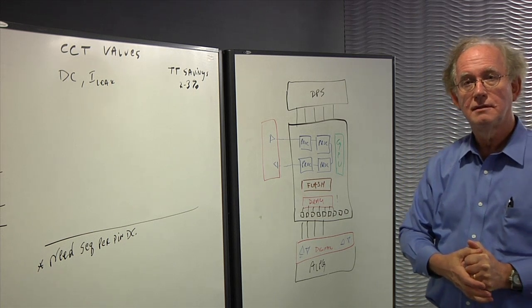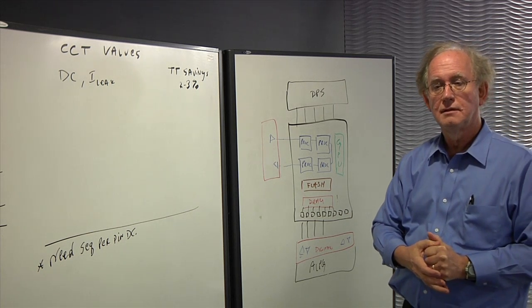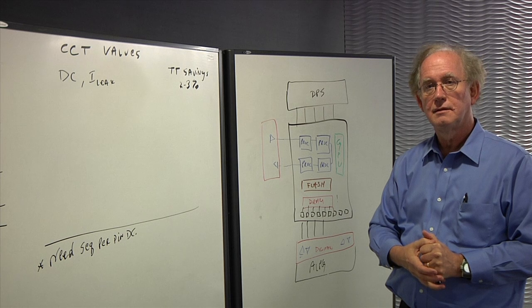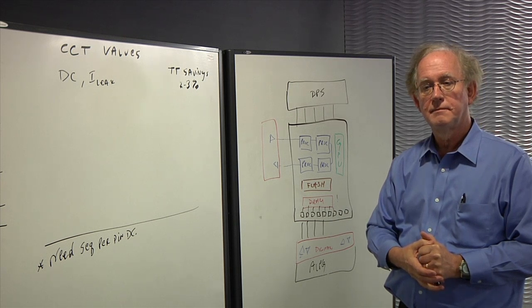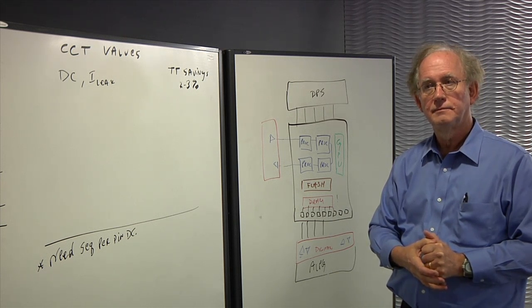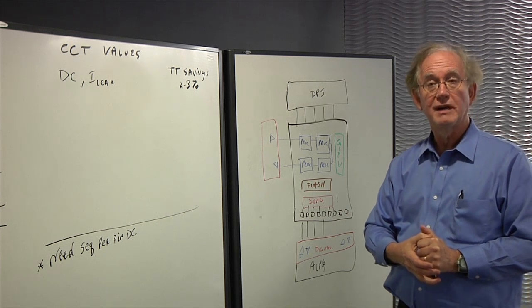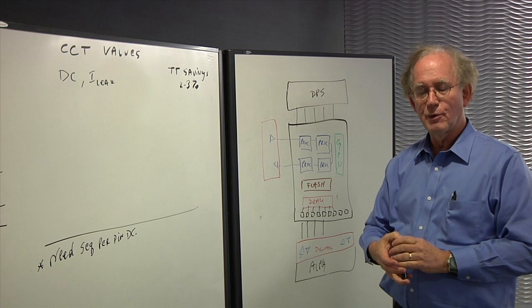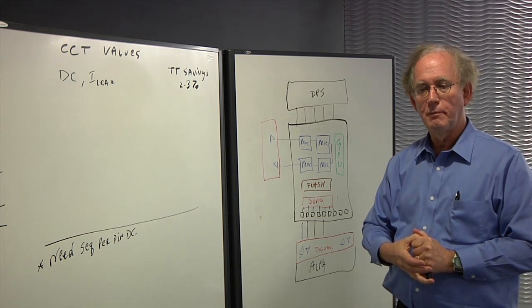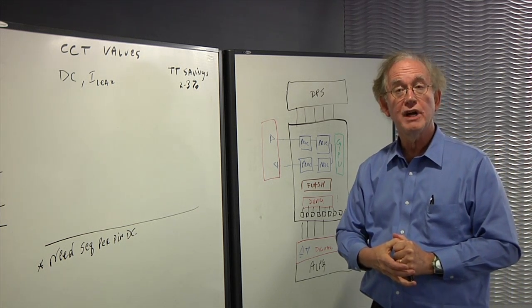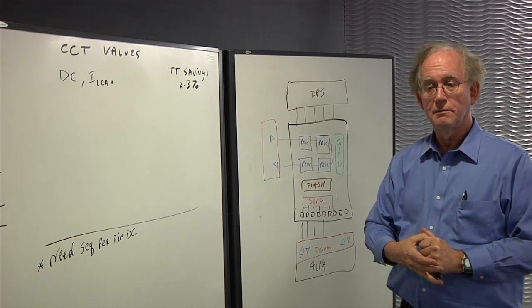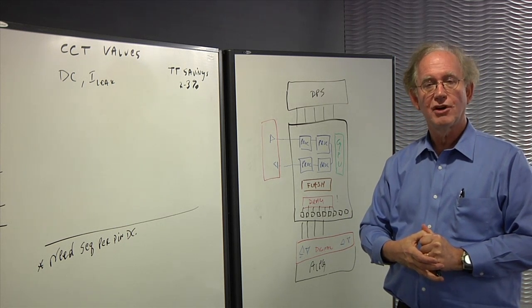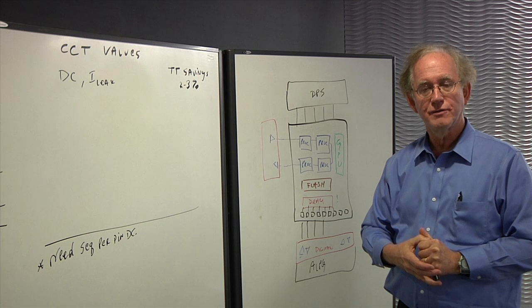Does it allow us to stay current with all the different things that we have to test? The complexity is just going up probably exponentially as opposed to doubling every couple years. Oh, absolutely. It is going up exponentially as opposed to doubling every three years. Are we staying current? There's a lot of us who feel like we're not. ATE vendors are under a lot of pressure to reduce the cost of tests.